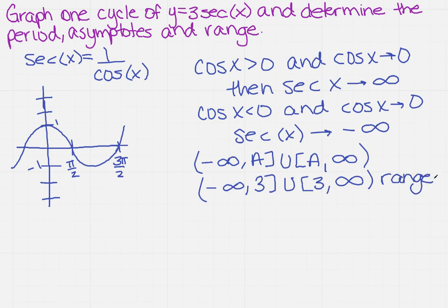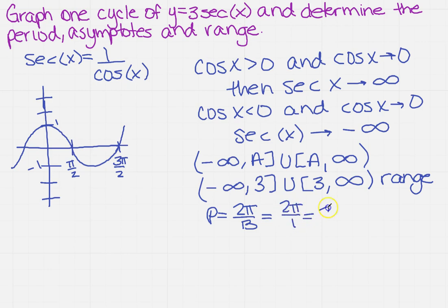I still need to find the period and the asymptotes. The period equals 2 pi over b. What is b in this case? It's 1. So I've got 2 pi over 1, meaning the period is going to be 2 pi.